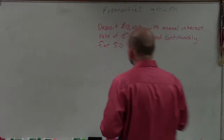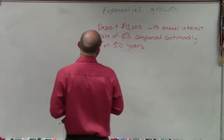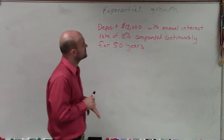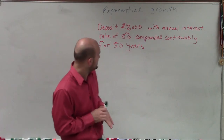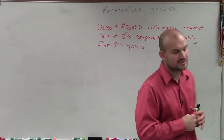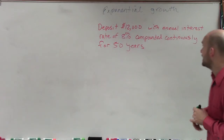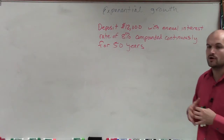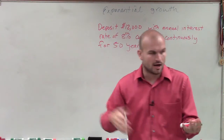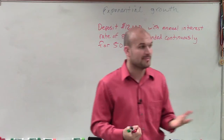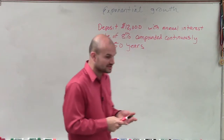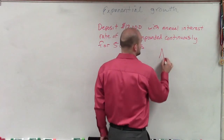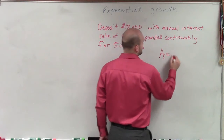So ladies and gentlemen, we have to deposit $12,000 with an annual interest rate of 8% compounded continuously for 50 years. A couple of things that was in your book as far as compound interest continuously: we're going to use the formula, which I just like to call PERT.